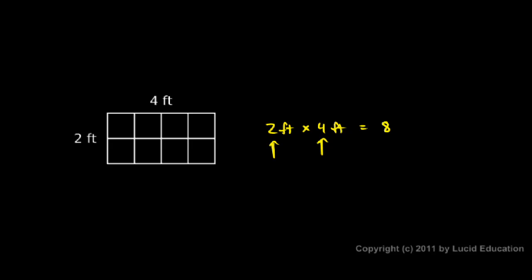We could say 2 feet times 4 feet equals 8. I get the 2 times the 4 to give me an 8. And then I still have this foot times a foot, and that gives me a foot squared, 8 square feet. Each of these squares is a square foot. We're pretending like each square is 1 foot on one side and 1 foot on the other. So that much area is a square foot. And we have 8 of those, so we have 8 square feet.